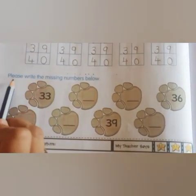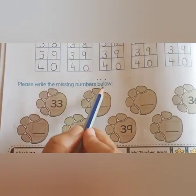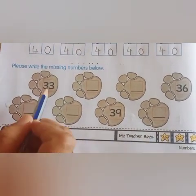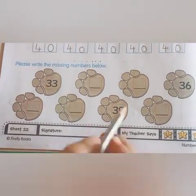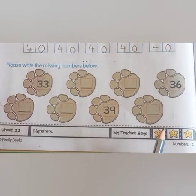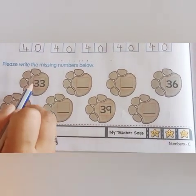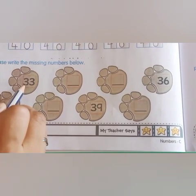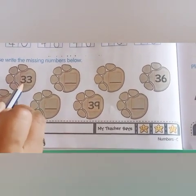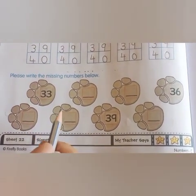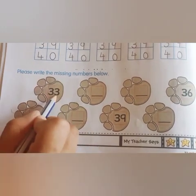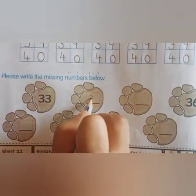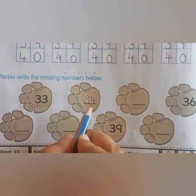Now students, see here. Please write the missing numbers below. Students, what do you have to write here? Here you have to write missing numbers. Now see here — which number is this? 33. Which number comes after 33? 34. So here you will write number 34. Touch the line and write this number. Understood.